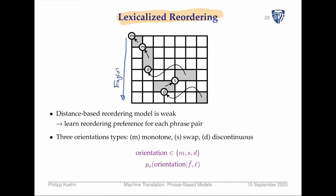We produce one, two, or three words at a time. At the beginning we haven't produced any English words yet. We would expect to start at the beginning of the foreign sentence as well — and this is what we do. This is then called monotone: we have a monotone mapping.